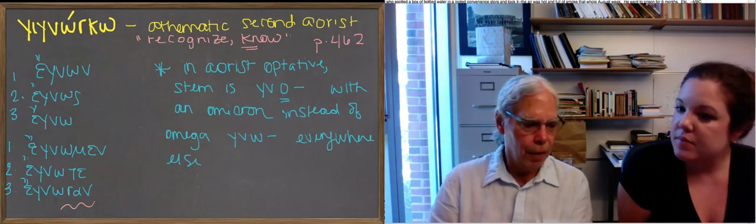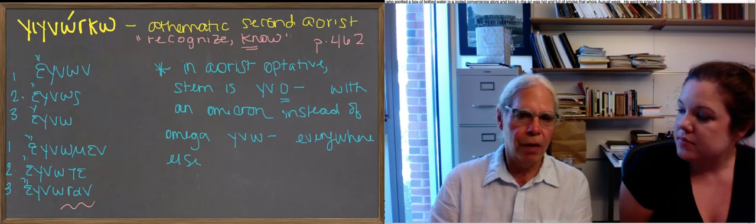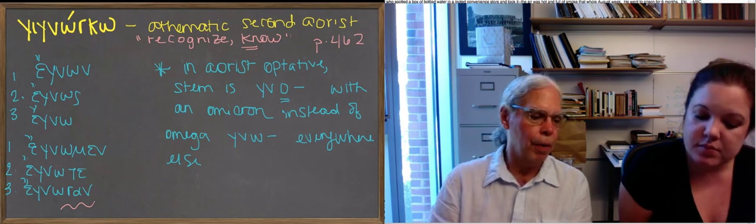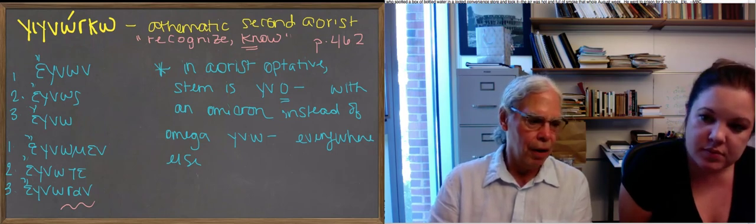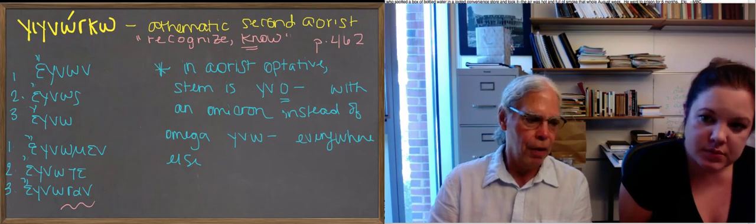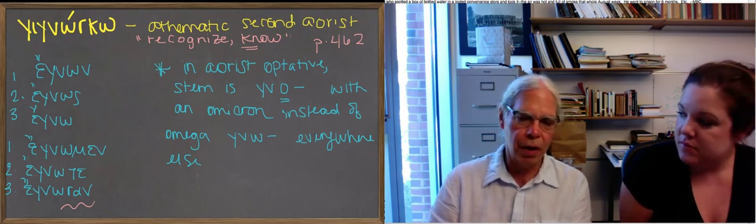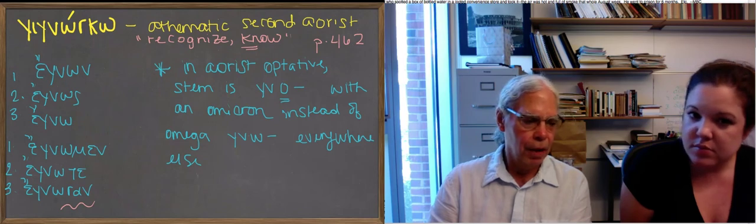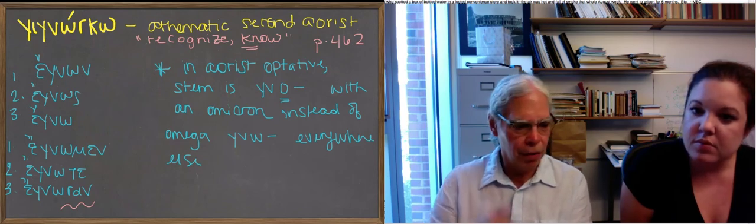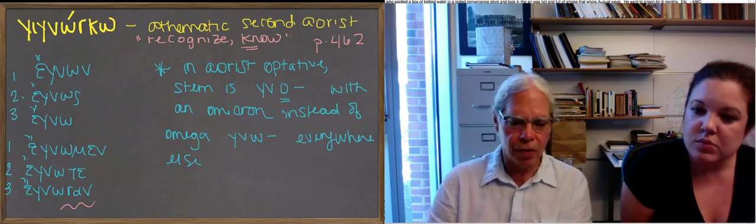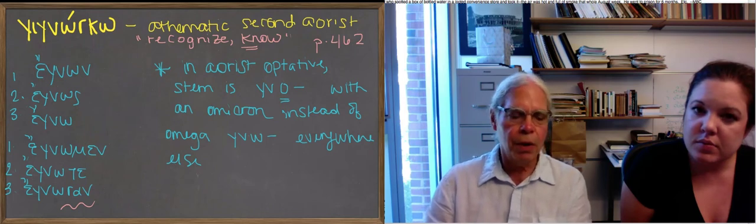So this is another vestigial thing. In one part of this verb, you have an aorist form that's athematic in its endings. And you're going to see this randomly in other verbs. This isn't the only example of this.